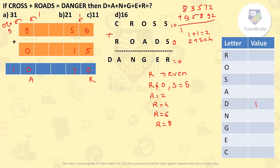Next, try R equals 2. To get R equals 2, S must be 1, since 1 plus 1 equals 2. But D is already 1, so S cannot be 1. Therefore R cannot equal 2 either.